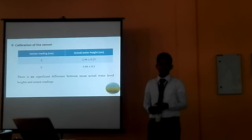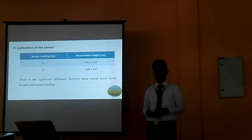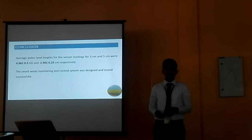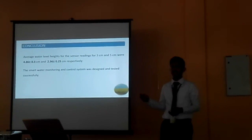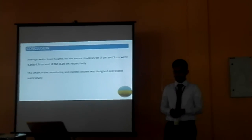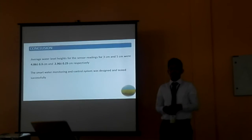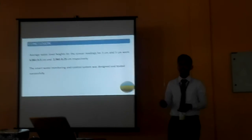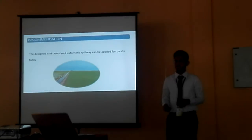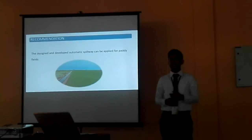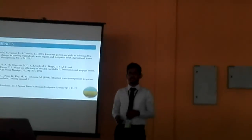According to sensor calibration, there is no significant difference between sensor readings and actual water height. The water height sensor readings at 3 cm and 5 cm yielded values of 2.96 cm and 4.86 cm respectively. In conclusion, the smart water control system was successfully designed and tested. As a recommendation, the design system can also be applied to feeder canals.